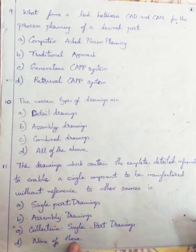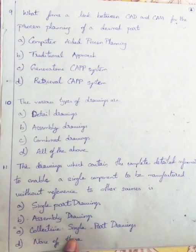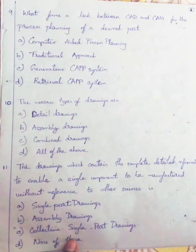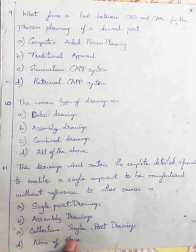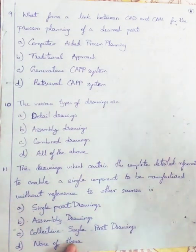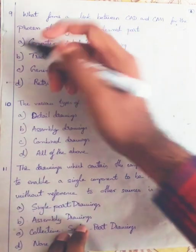Question 9: What forms a link between CAD and CAM for process planning of a desired part? Option A: Computer Aided Process Planning, Option B: Traditional Approach, Option C: Generative CAPP, Option D: Retrieval CAPP. Traditional approach is manual, so we eliminate Option B. Since Generative CAPP and Retrieval CAPP both come under Computer Aided Process Planning, the answer is Option A: Computer Aided Process Planning.